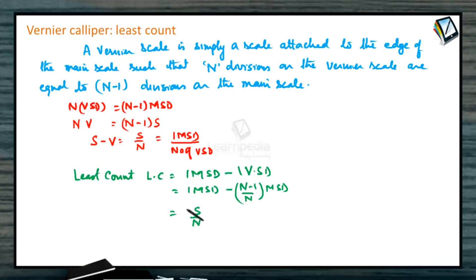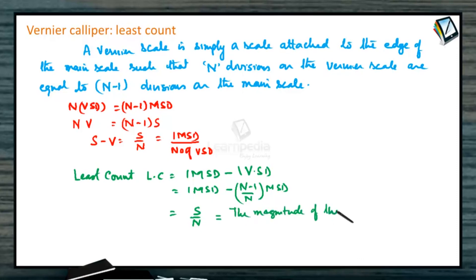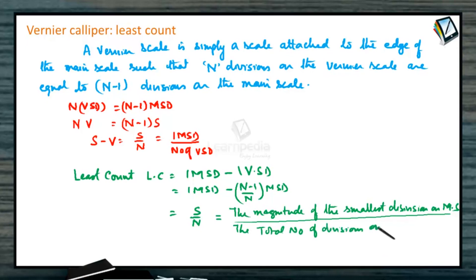The least count equals the magnitude of the smallest division on the main scale divided by the total number of divisions on the vernier scale. This is called least count — basically the minimum measurement an instrument can make.